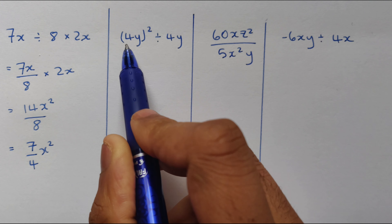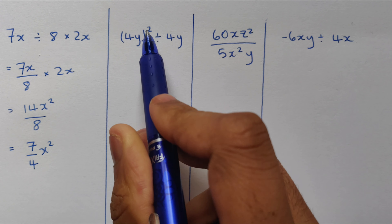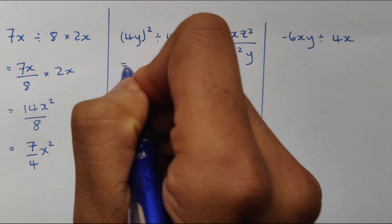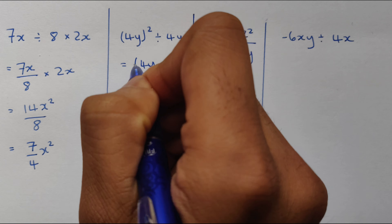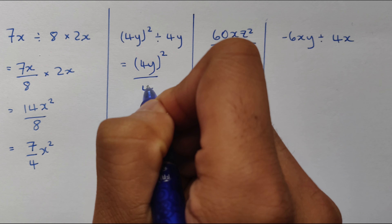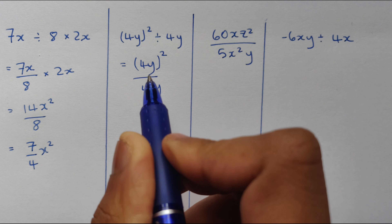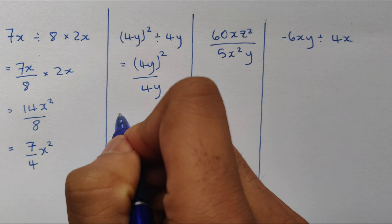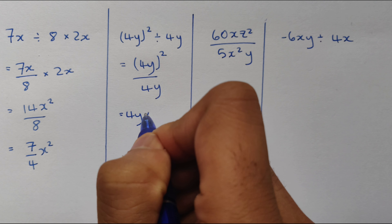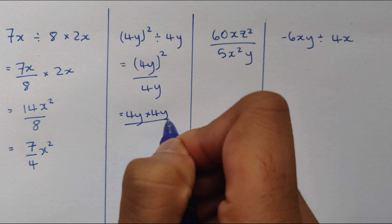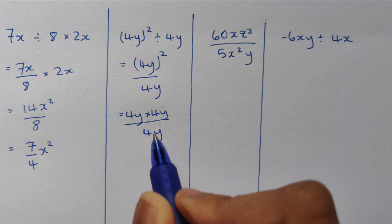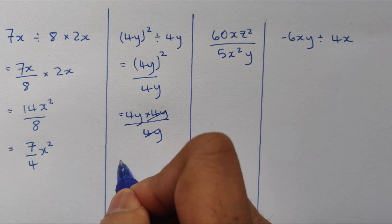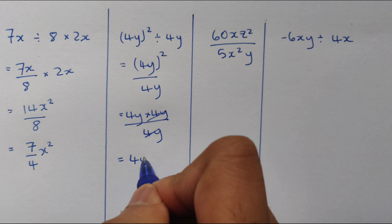Next example: 4y all in brackets squared, divided by 4y. Let's write this in fraction form: 4y all in brackets squared over 4y. Because it's squared it's multiplying by itself, so we get 4y times 4y divided by 4y. Since we have a 4y on top and a 4y on the bottom, these cancel out, and our answer is 4y.